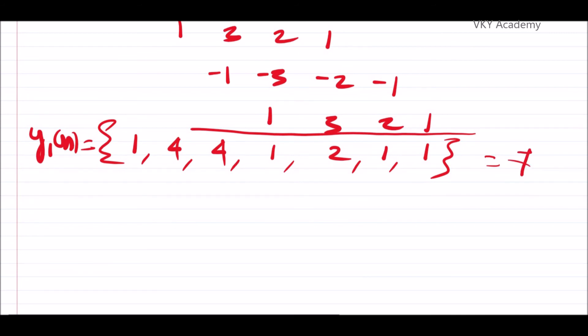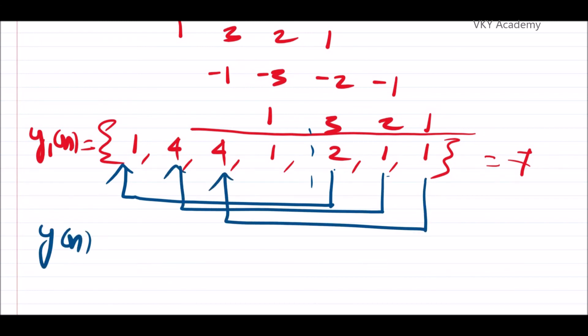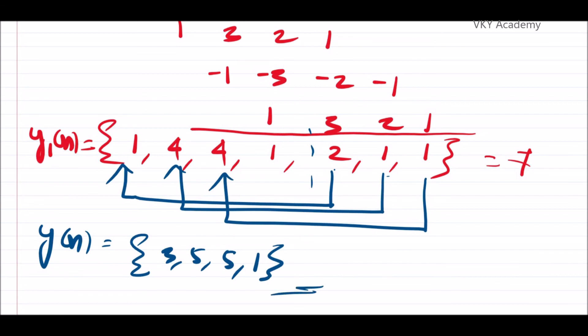Using the same method to get the circular convolution, we add the 5th sample (2) to the 1st, the 6th sample (1) to the 2nd, and the 7th sample (1) to the 3rd. The circularly convoluted result y[n] = {1+2, 4+1, 4+1, 1} = {3, 5, 5, 1}. In the upcoming lecture we will discuss the matrix method and concentric circle method for determining circular convolution. Thank you.